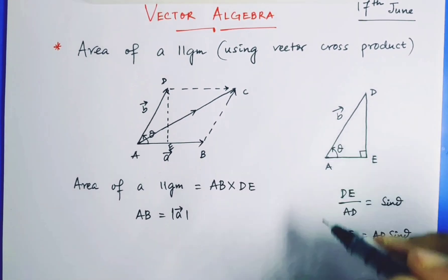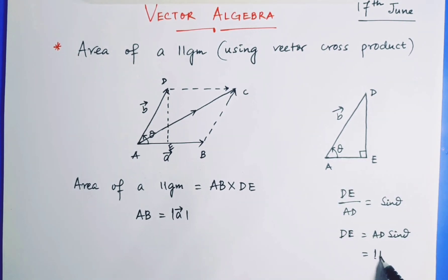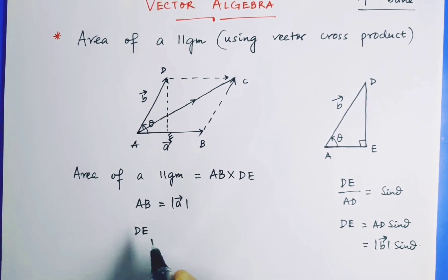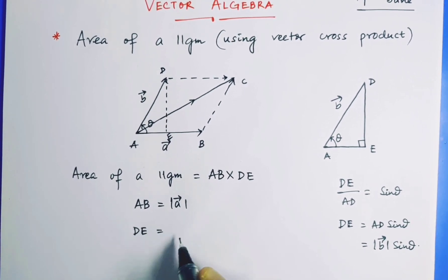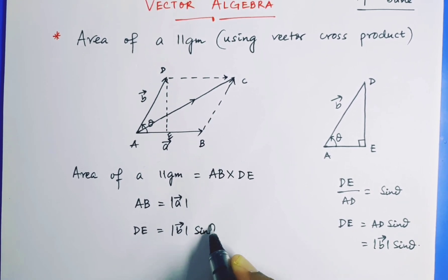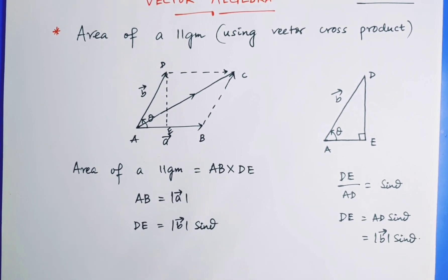Now can you tell me what is AD? AD is nothing but the magnitude of the B vector. So now, DE we already derived, that is equal to |B| sine theta. Am I clear? Let's put these values in the above equation.